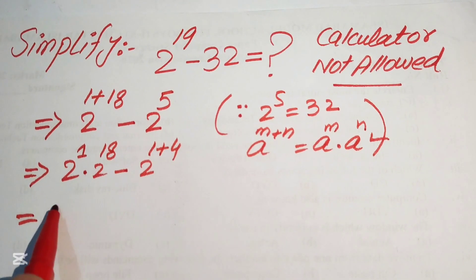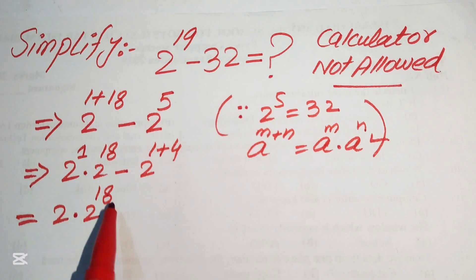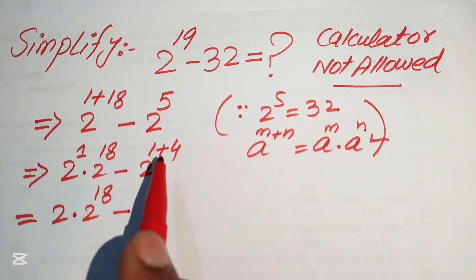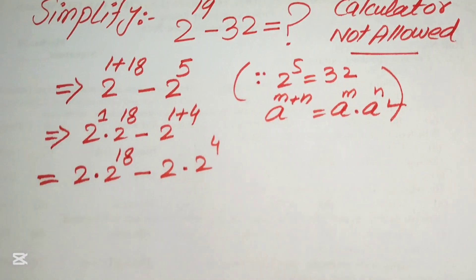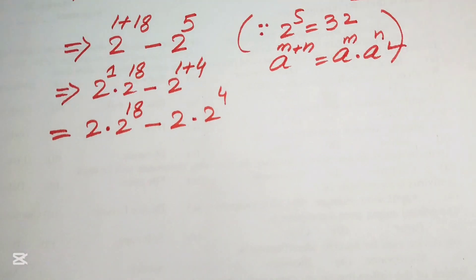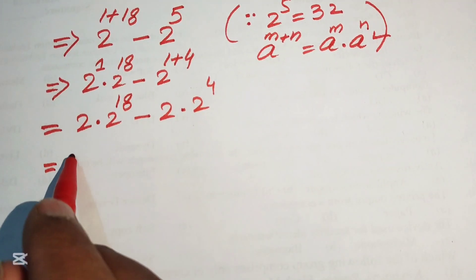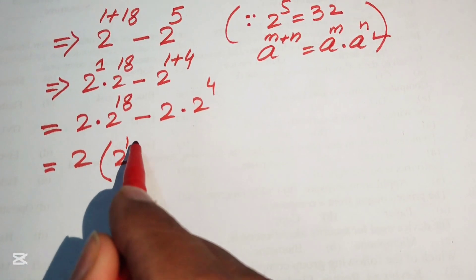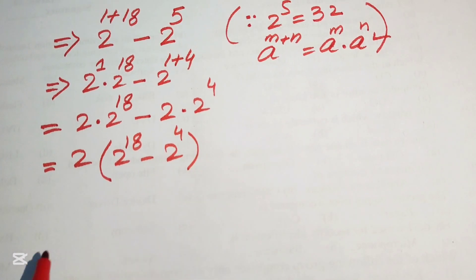So now we write this as 2 times 2 to the power of 18. And we again apply this exponential law on this term and it will be written as 2 times 2 to the power of 4. Further, we need to take common 2 from both of these terms, and when we take common 2 the remaining terms are 2 to the power of 18 minus 2 to the power of 4.